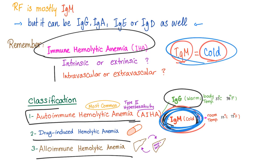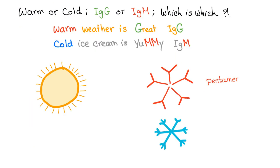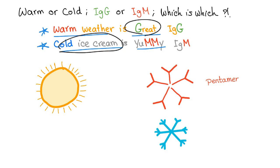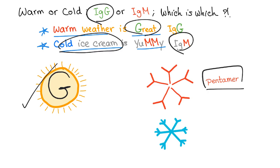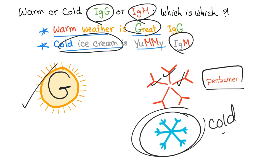The mnemonic I use: draw a sun — it's warm and circular, so draw a G inside it to remember IgG is warm. IgM is a pentamer with five pieces that looks exactly like a snowflake, and snowflakes are cold — so IgM is cold. That's how I remember it without relying on arbitrary mnemonics.